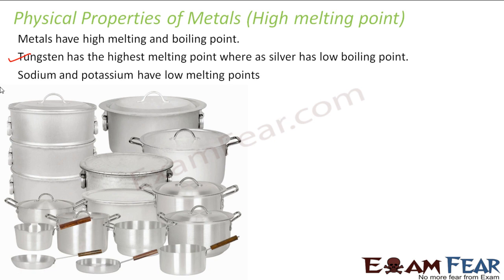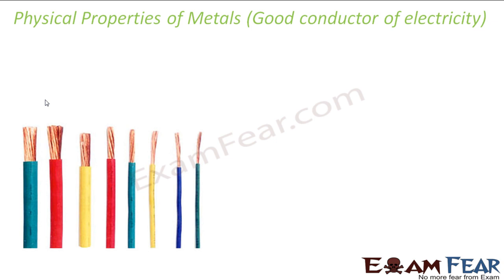Sodium and potassium are metals, but generally they don't follow the physical properties of metals — they don't shine, they're not hard, not malleable, not ductile, and they have low melting points. So, they are exceptions. Regarding conductivity of electricity, most of the wires we use at home are made of copper because copper is a good conductor of electricity. Similarly, metals are generally good conductors of electricity.